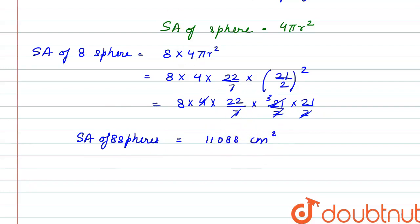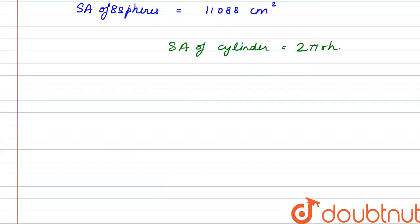Now we also know that the formula for surface area of cylinder is 2πrh. So here we have to find the surface area of 8 cylinders. So that will be 8 multiplied by 2πrh.